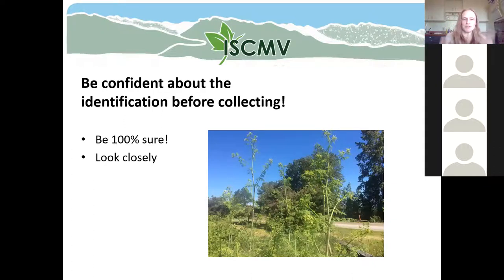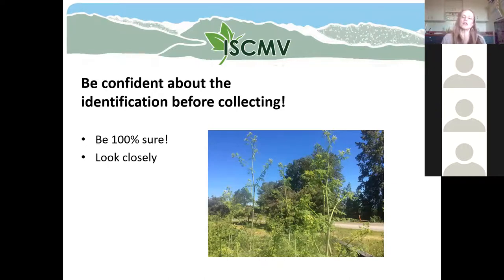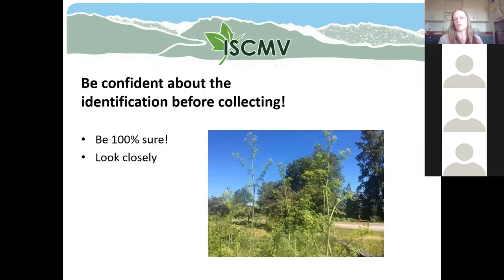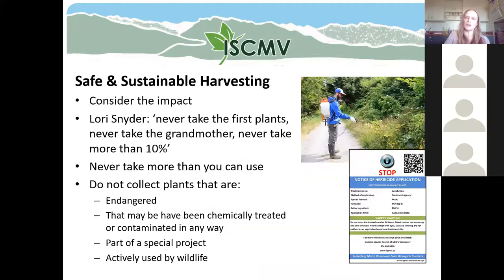Now that we've covered tips on how to identify plants, let's focus on what we need to know before collecting a plant. You really want to be confident about your identification before collecting — I'm talking 100% sure. You need to look really closely and pay close attention. The plant in this photo looks beautiful but is highly toxic — it's called poison hemlock. You need to be able to determine that any plant you're collecting is not that plant or any of the other toxic plants out there. Before you do any collecting, do your homework and be very confident you're collecting the plant you think you're collecting.